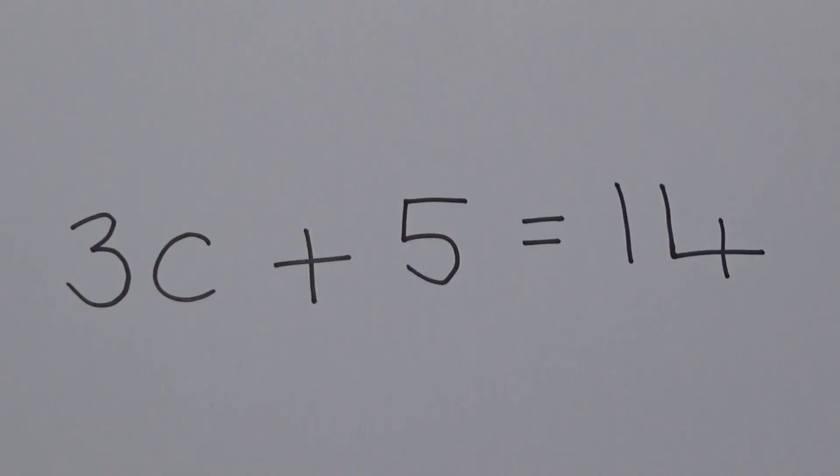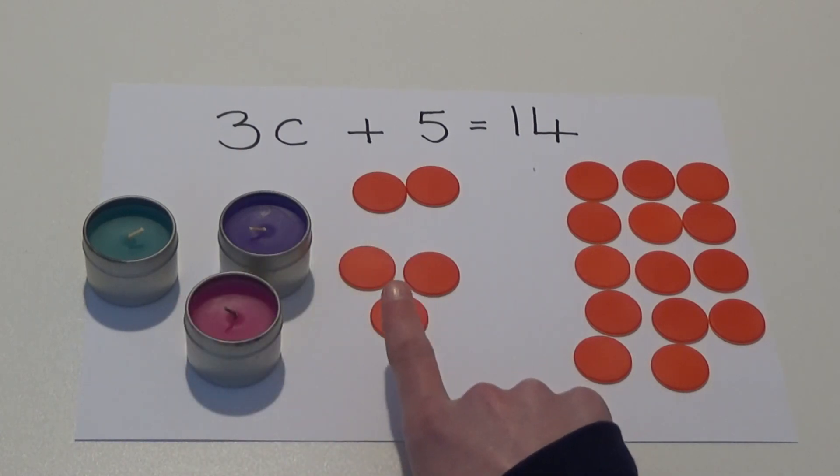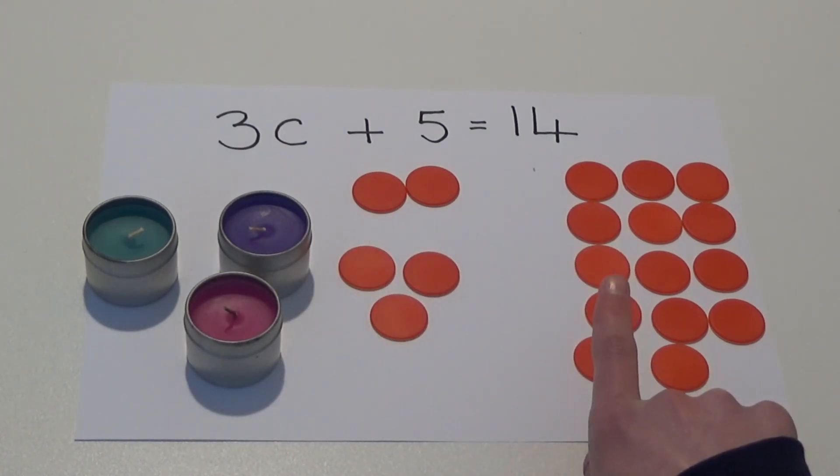We're going to look at how to use these resources to solve the equation 3C plus 5 equals 14. We're using candles to represent C and counters to represent the 5 and 14. We can see that 3 candles plus 5 counters are equal to 14 counters.